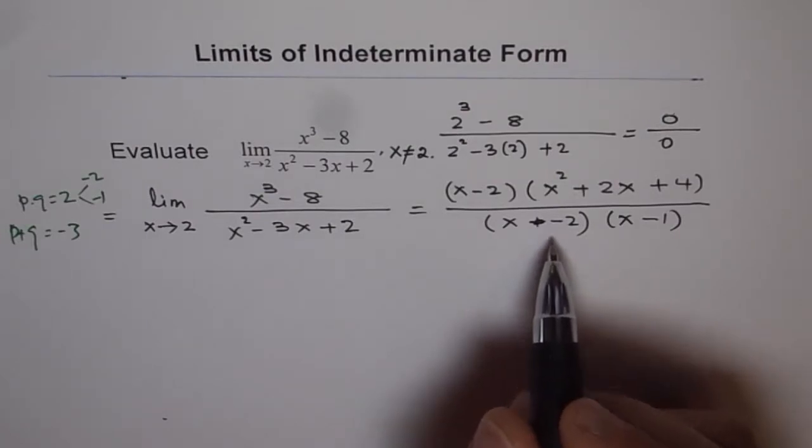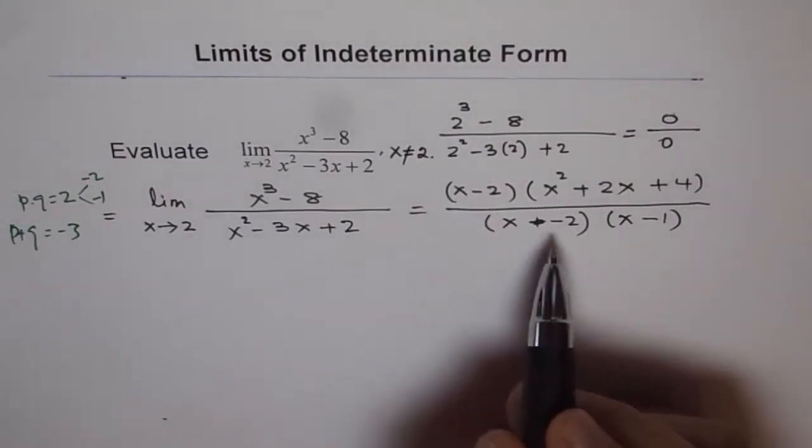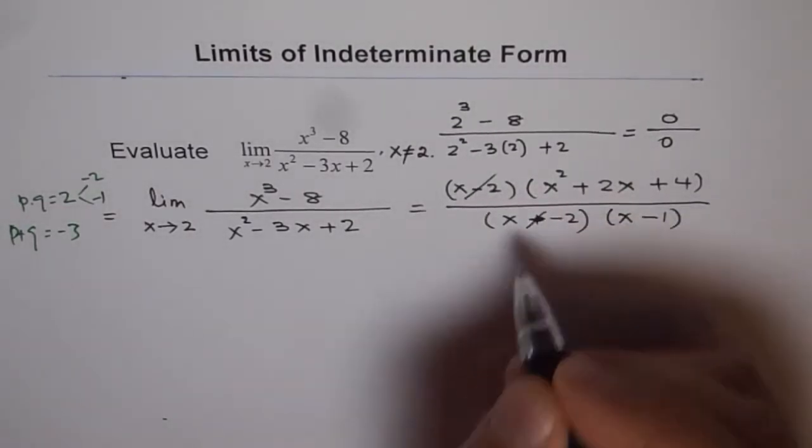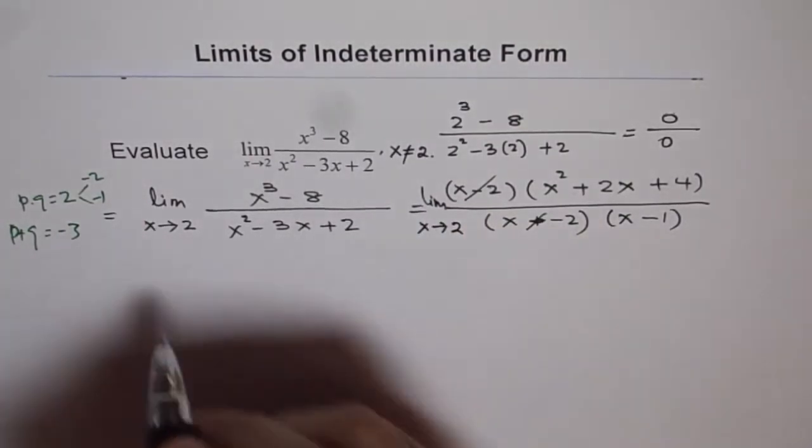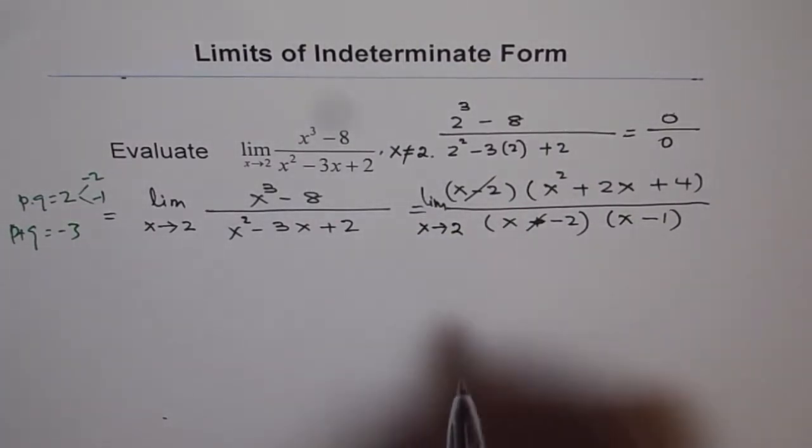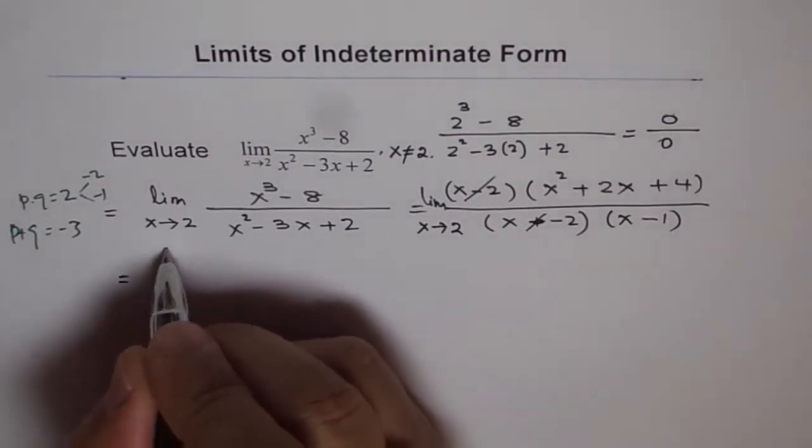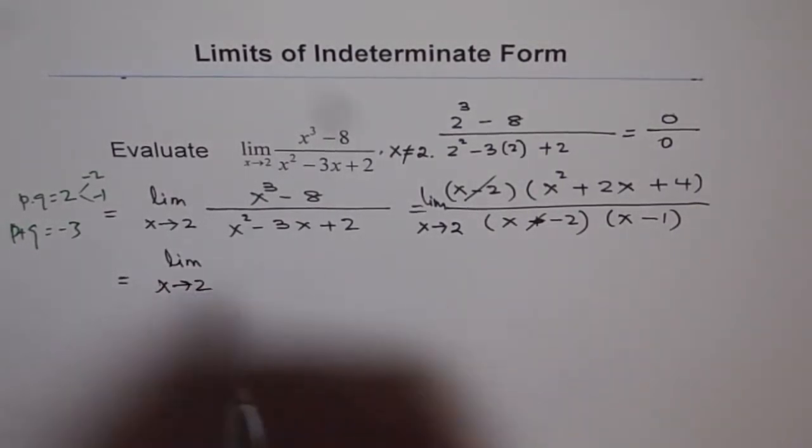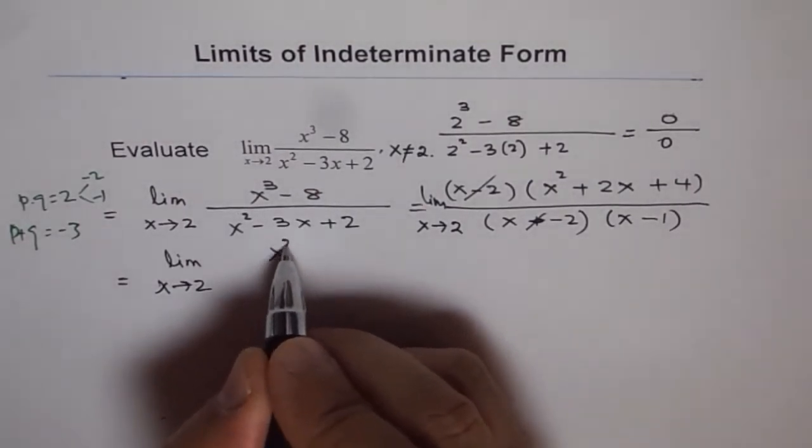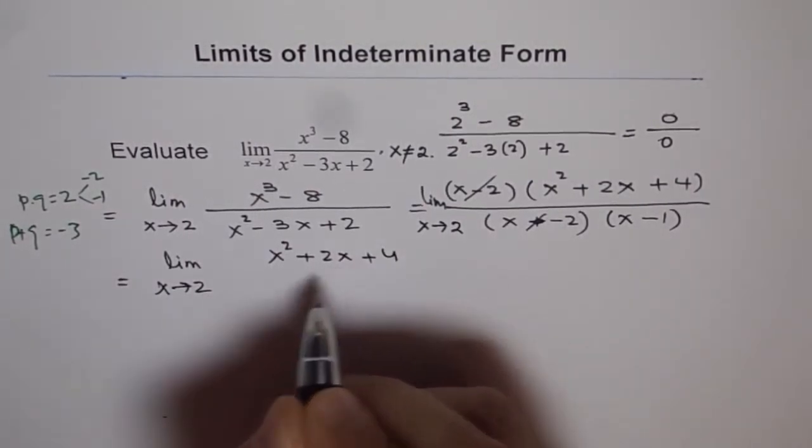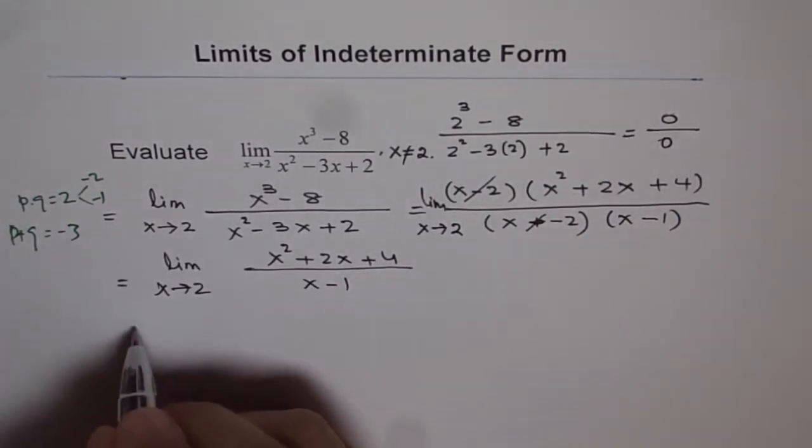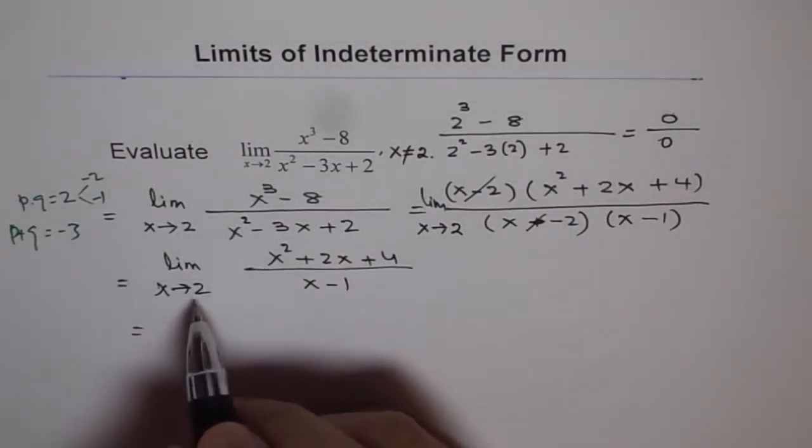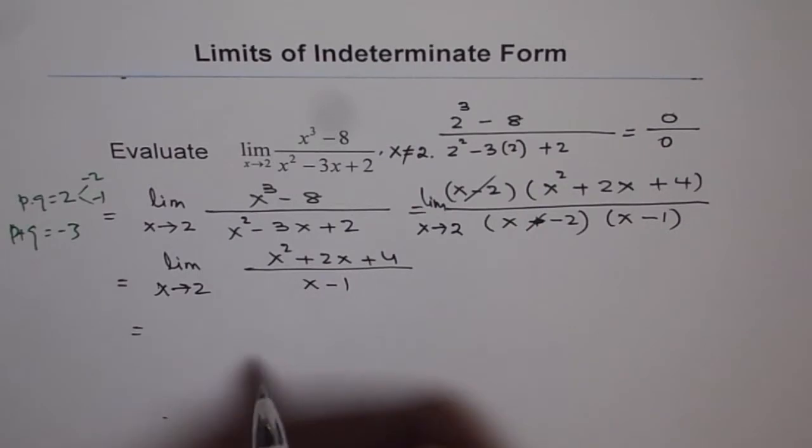As we were expecting, we do get x minus 2 as a factor in both numerator and denominator. So these can be cancelled. We have to write limit—don't forget to write limit x approaches 2 or the limiting value in each of these expressions. That is most important. So now we get a simplified form after cancelling the common factors, which is x squared plus 2x plus 4 in the numerator and x minus 1 in the denominator. Now we can apply the laws of limits and substitute the value of x equals 2 to find the limit of this function.